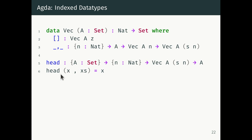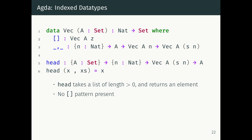Once you have length-indexed data types, you can write programs that would have been unsafe in OCaml but are safe in Agda. The simplest example is the head function. In OCaml you'd give it the type List A → A, and throw an exception on the empty list. In Agda, you can say the type of head requires a vector of length successor of n — a non-zero length. If we know the length is non-zero, we only need one pattern match clause: the head of x cons onto xs is x. That's the whole program. We don't need to handle the empty case because it's impossible — no nil pattern at all.